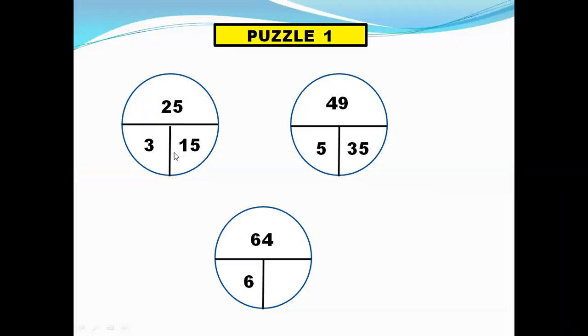So first we have puzzle one. Here we have three circles. The numbers are 25, 3, 15, 49, 5, 35, 64, 6 and we have to replace this question mark. So how do we do it? Think of it.